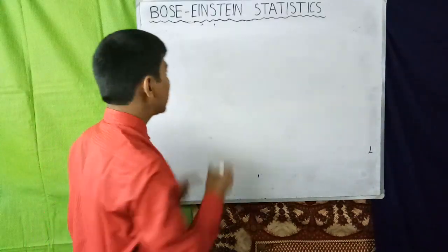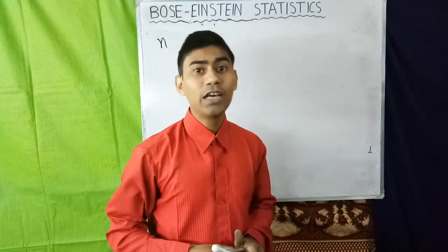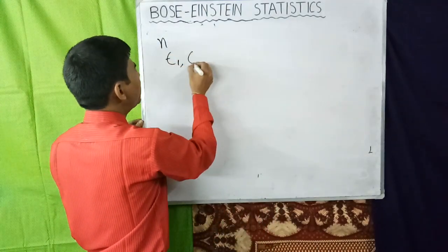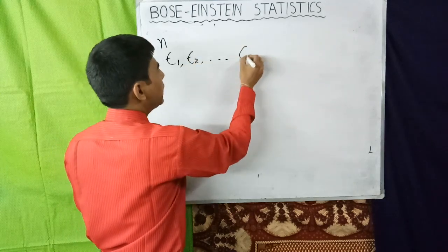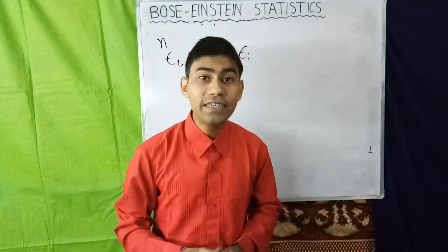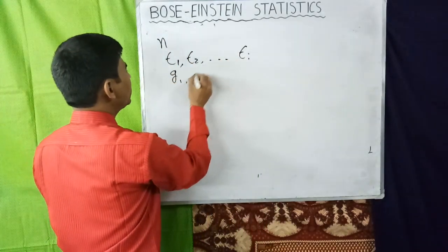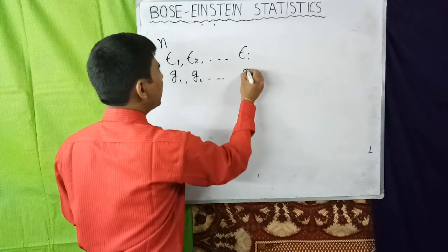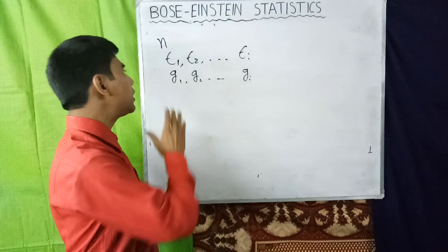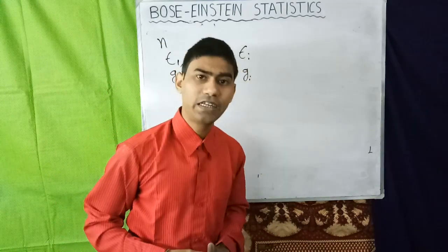Now suppose N be the total number of particles composing the system. And suppose ε₁, ε₂, ... εᵢ are the allowed values of energies of the particle. Suppose G₁, G₂, ... Gᵢ are the number of quantum states corresponding to the energy levels ε₁, ε₂, ... εᵢ respectively.